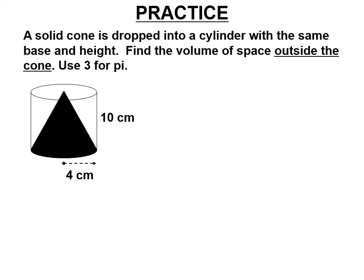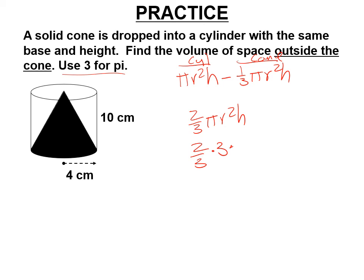A solid cone is dropped into a cylinder with the same base and height. Find the volume of space outside the cone. Use 3 for pi. I've already told you this. If you have a cylinder, you can do the math. We have a cylinder pi r squared h. We're taking away the cone. And 1 minus 1 third is 2 thirds pi r squared h. So it says use 3 for pi. So I'm doing that. The radius is 4. So I'm squaring that. And the height is 10. These 3s cancel. 4 squared is 16. 2 times 16 is 32. And 32 times 10 is 320. So this is approximately 320 cubic centimeters outside the cone but inside the cylinder.